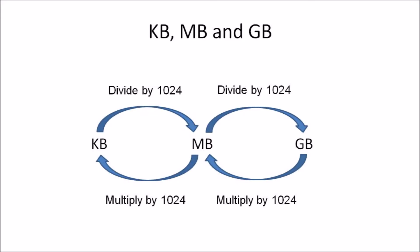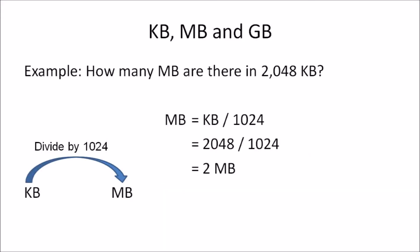Example 1: How many megabytes are in 2048 kilobytes? We are converting kilobytes to megabytes, so we divide by 1024. The formula is: megabytes = kilobytes ÷ 1024. Substituting: 2048 ÷ 1024 = 2 megabytes.